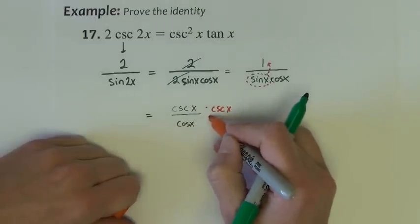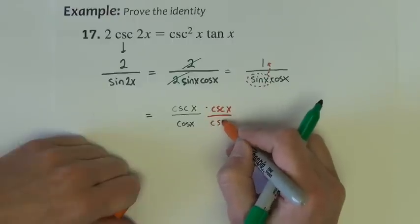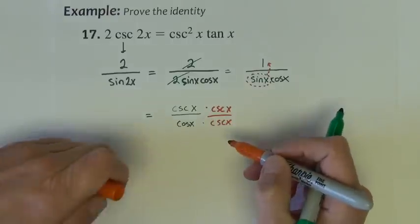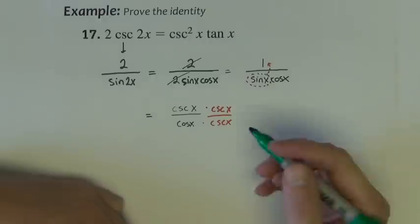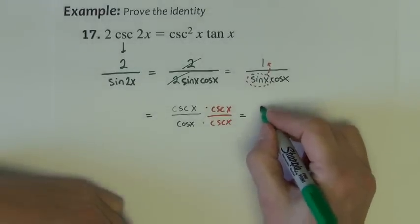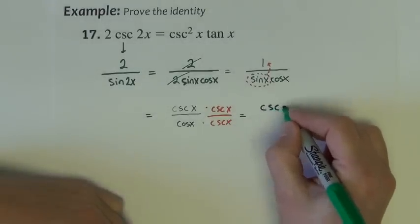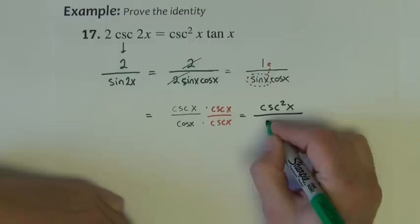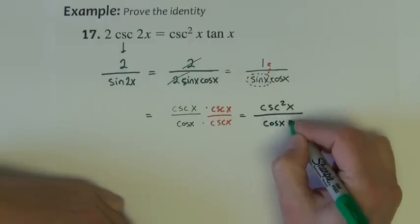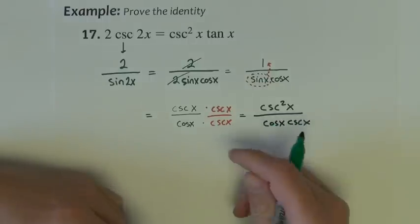Well, I can't just do that unless I also divide by cosecant. So then I essentially multiply by 1, that's fair to do. So the numerator becomes cosecant squared x, denominator is now cosine x cosecant x.